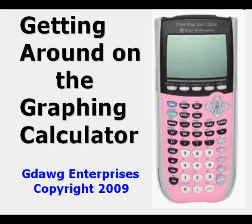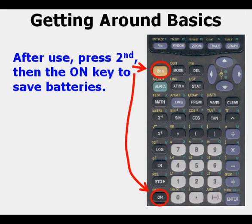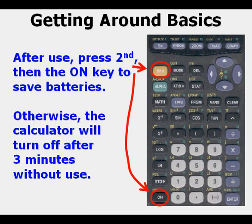Getting around on the graphing calculator. The calculator can be turned on by pressing the ON key, and after you're done using the calculator you can save batteries by pressing 2nd then the ON key again. Otherwise it will turn off automatically after three minutes.